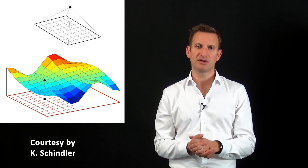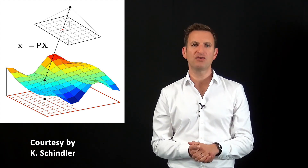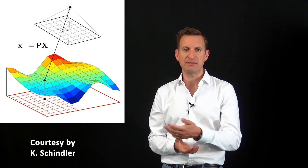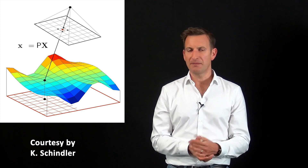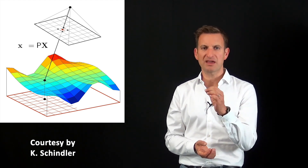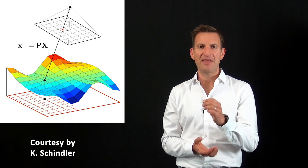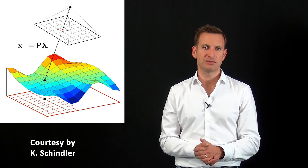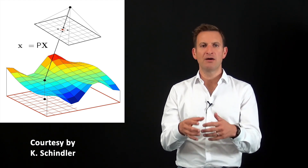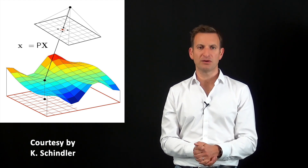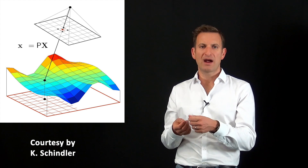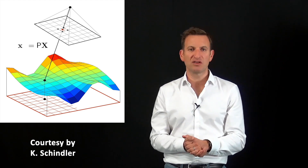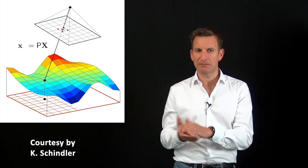We then take that 3D point and project it into the camera image using the standard equation — x equals Px — that transforms 3D points via the projection matrix into an image point. We then take the color or intensity value at that pixel location, copy it, and store it at the corresponding location in the orthophoto. We repeat this process for all pixel locations in the orthophoto.